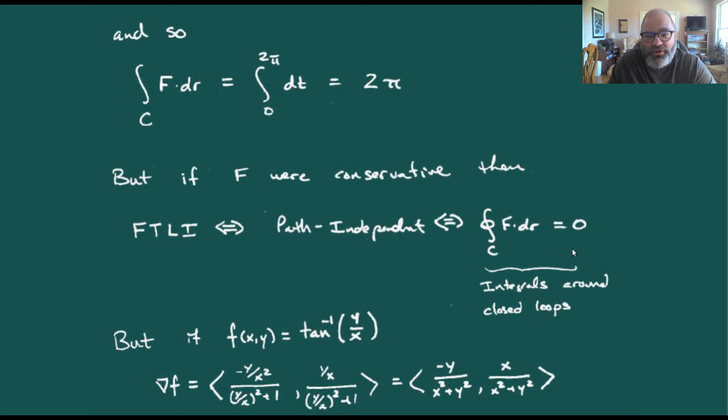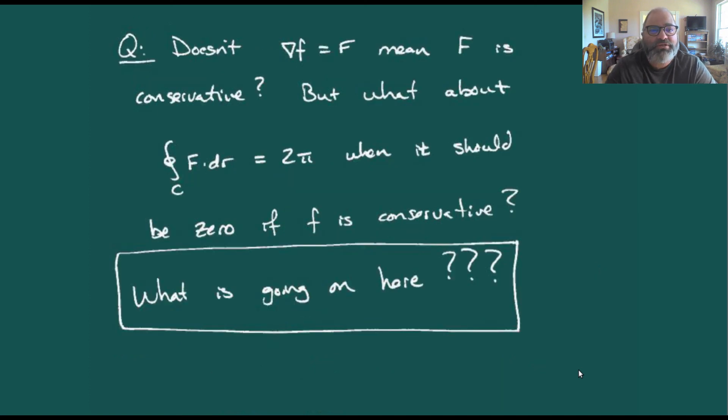Hold on. What is going on in this case that we compute this line integral over this loop? It should be zero, but we're getting two pi. But this thing is the gradient of some potential function. What's happening in this particular example?